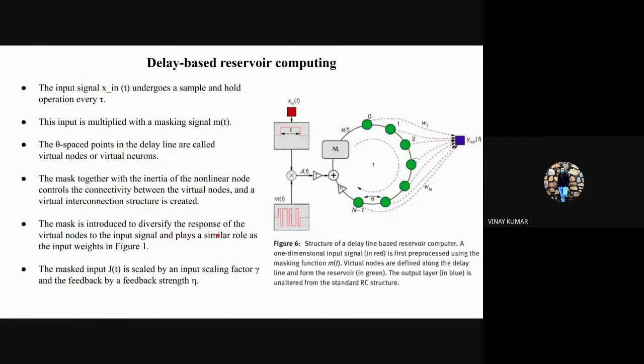The mask is introduced to diversify the response of the virtual nodes to the input signal. There is the scaling factor gamma and the feedback strength is beta. This is the structure of the delay-based reservoir computing.